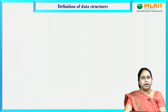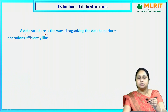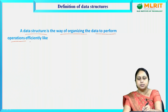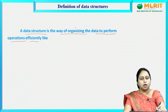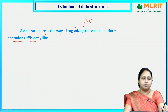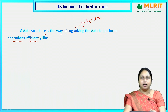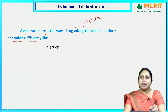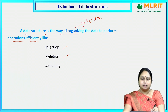Let us see the definition of data structure. A data structure is a way of organizing the data to perform the operations efficiently. Organizing of data means you are going to maintain the data in the form of some structure. If the data is in a structured format, then you can perform operations in an efficient manner, like insertion, deletion, and searching.